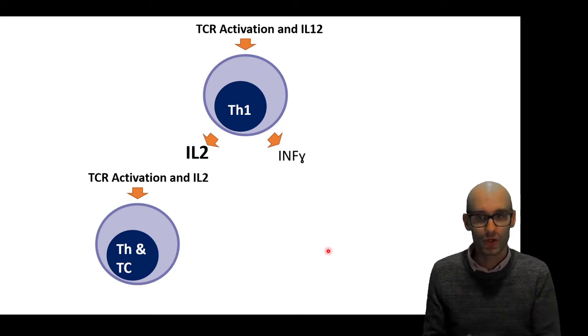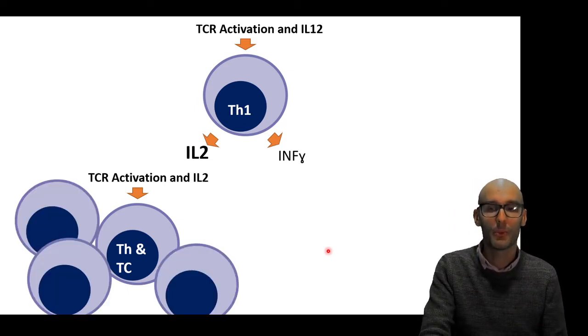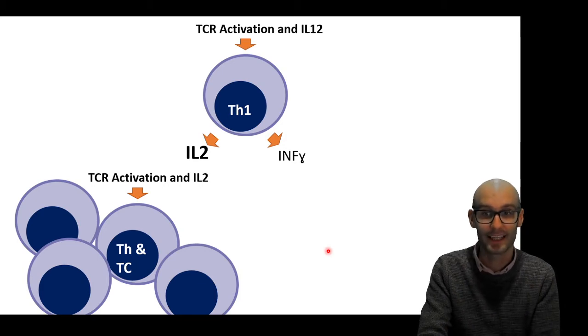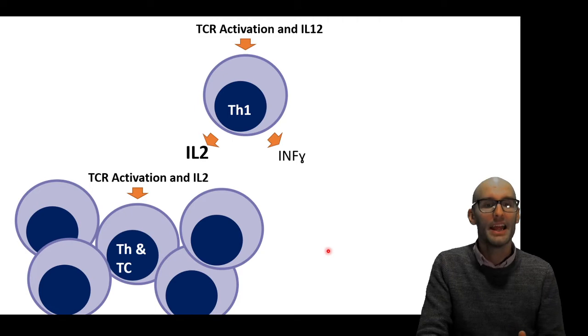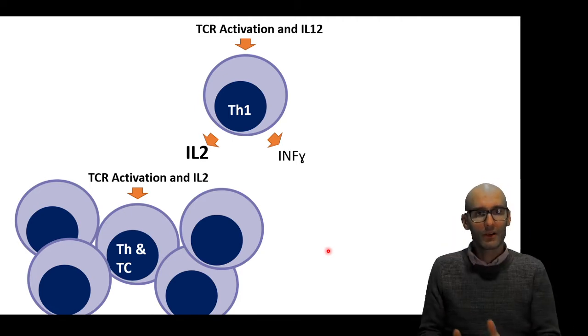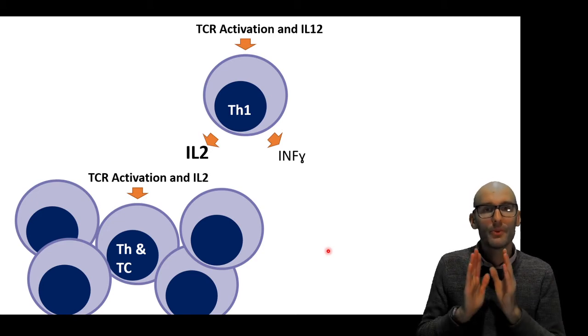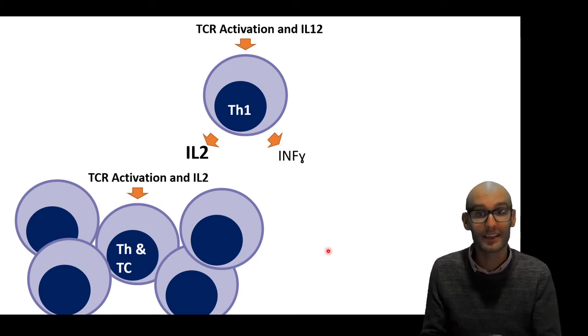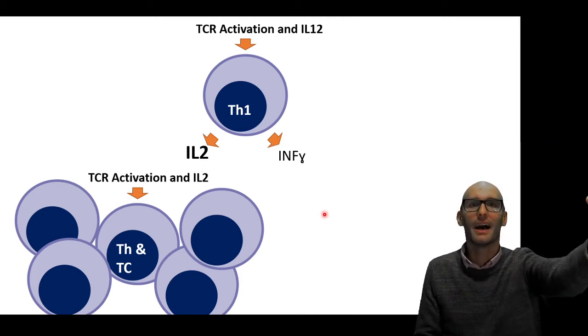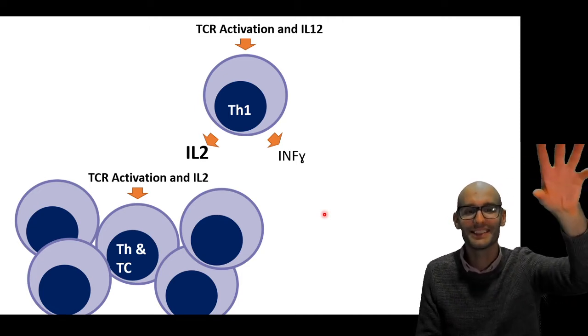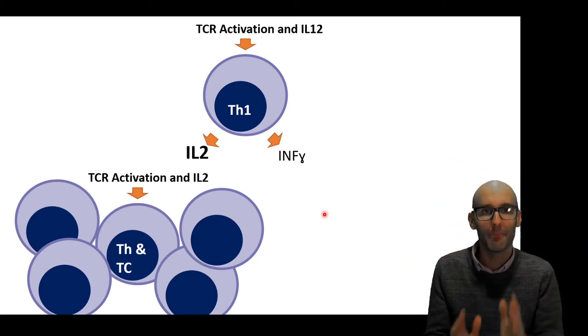So what do these cytokines do? Well, interleukin-2 will cause the proliferation of T helper cells and cytotoxic T cells that have also had their TCR receptor activated. Now remember, the T cell receptor can only detect a single antigen. So these guys need to be the ones that can recognize the pathogen that was originally phagocytosed by the antigen presenting cells. So we're all responding right now to the same pathogen.